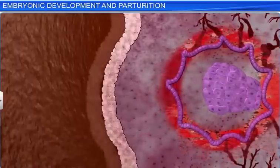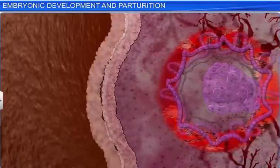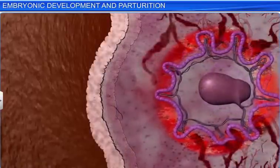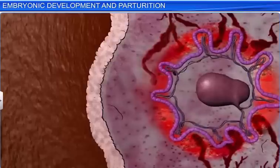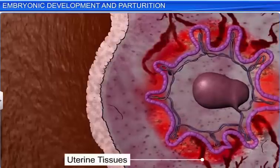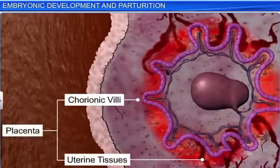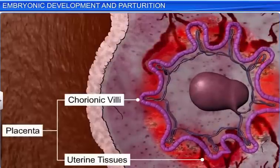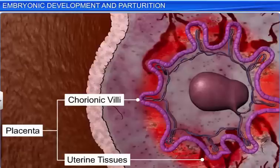As the chorionic villi grow further, they interlock with uterine tissues to form the placenta — a structural and functional unit between the developing embryo and the maternal body.